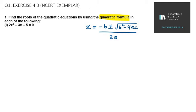Some people like to write this as minus b plus minus under root b, where they define b square minus 4ac separately. You can write it either way — it's your choice. So let's start with the first part.